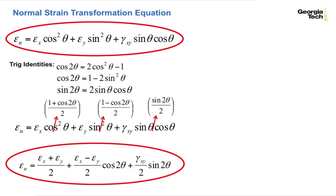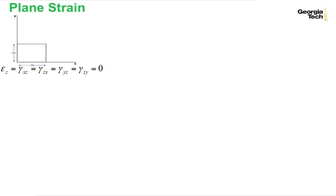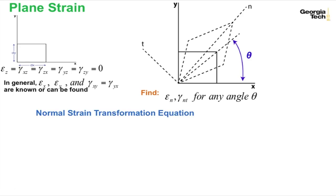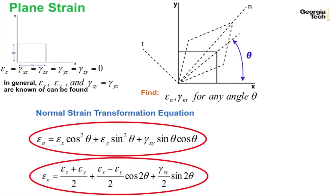And when I do that and put those trig identities in, this is the result. So I finally now, going through the math and the geometry, have strain transformation equations that take my plane strain known for epsilon x, or no, I know the strains in the xy and the gamma xy shear strain. I can now transform them for any normal and tangential coordinates at any angle theta. And this is the normal strain transformation equation, completely analogous to the stress transformation equations we came up for the case of plane stress. And this is what they look like.